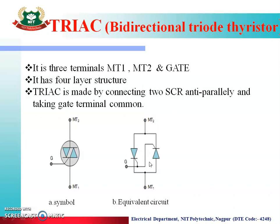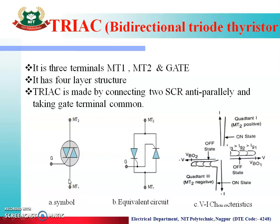The terminals are named MT2 and MT1, which means main terminal 2 and main terminal 1. This is the VI characteristics of TRIAC, which shows that TRIAC is a bi-directional device because the curve in the first quadrant and the curve in the third quadrant are similar. This means if MT2 is positive and MT1 is negative,